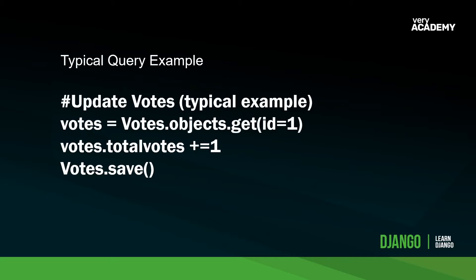Let's take a look at a typical query example. Here we have a votes model and we utilize get to extract a single item from the database where the ID equals one. We then increment the votes by one and save. So here we're creating a query with the cost of two — utilizing get and save — where we get data from the database, put it into memory, perform the operation, and then run a query to save the data. This type of increment is quite popular, and once you start scaling up, these query operations can be quite costly.